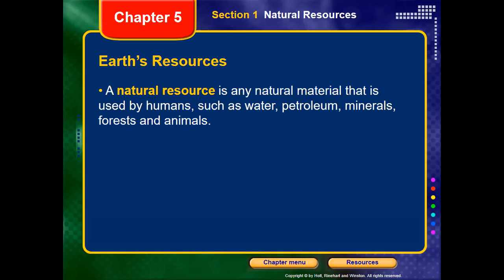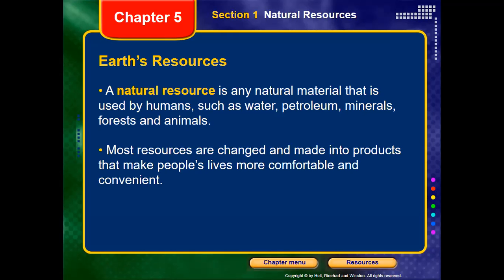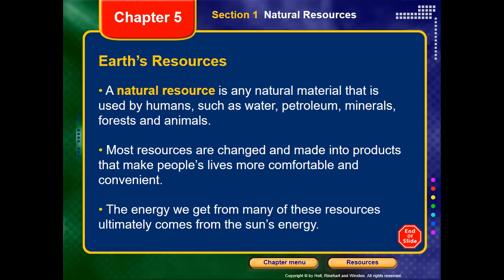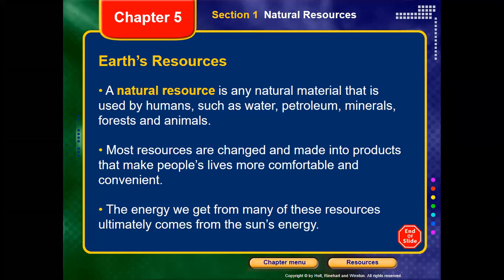These resources are not used in their pure or natural form — we make changes or industries, we interfere with these resources to change them into usable forms or products that could make our life easier and comfortable. Here is a very important statement: the energy we get from many of these resources ultimately comes from the sun's energy. Anyone could explain this statement regarding your knowledge? Any energy we get from any resource ultimately comes from the sun's energy — what does it mean?